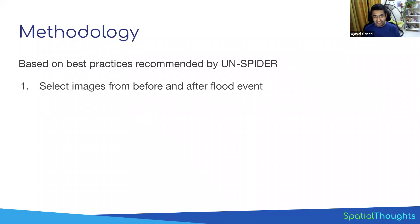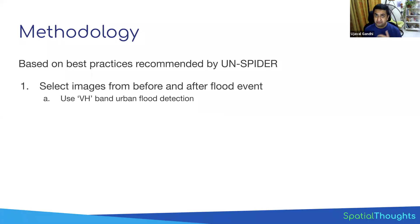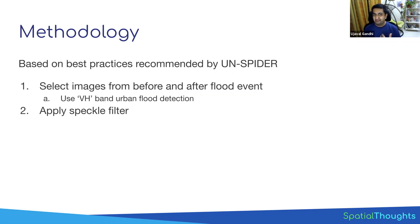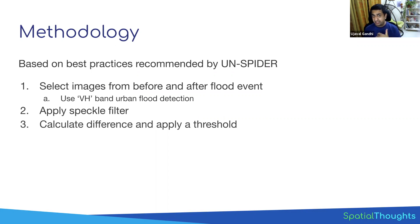The first step is to take the collection, filter it, and select images for before and after the event. We'll use the VH band for urban floods — VH is preferred where there could be urban structures. If you just want to detect open water, VV band is more suitable. For the second step, radar data contains a lot of salt-and-pepper noise called speckle, so a simple subtraction would produce a lot of noise. We apply a speckle filter on both images and then calculate the difference to find which areas changed the most.